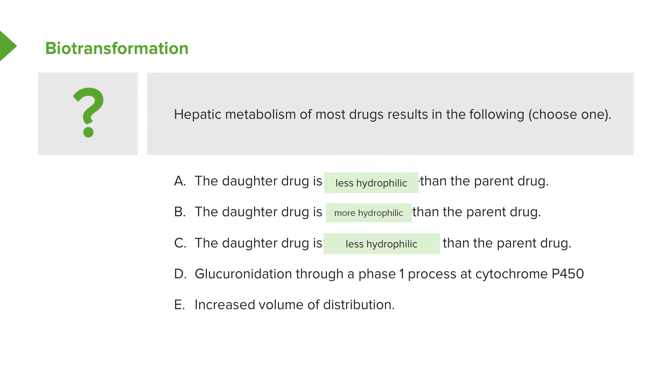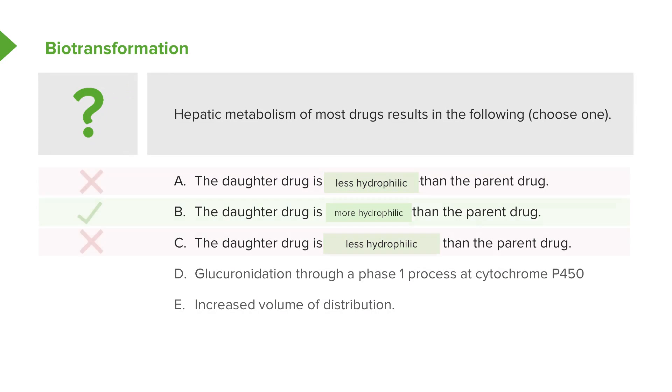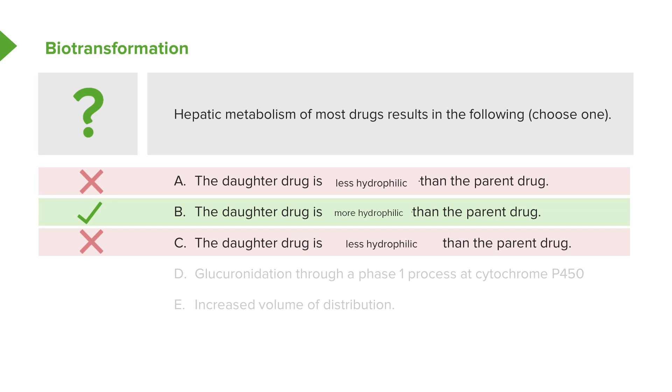A couple of points. Remember that lipophilic is the same as hydrophilic — convert the terms into something common. You know that hepatic metabolism results in drugs that are more hydrophobic, so let's convert the questions into hydrophobic statements. A becomes 'less hydrophilic.' B becomes 'more hydrophilic.' C becomes 'less hydrophilic.' Now you can see that A and C are the same, and B is opposite to both. It's impossible to have two correct answers, so A and C have to be wrong. Because there's an opposite, if the wrong answer is wrong, then the opposite must be right. D and E are not relevant to the question. The answer is B — the daughter drug is less lipophilic than the parent drug.